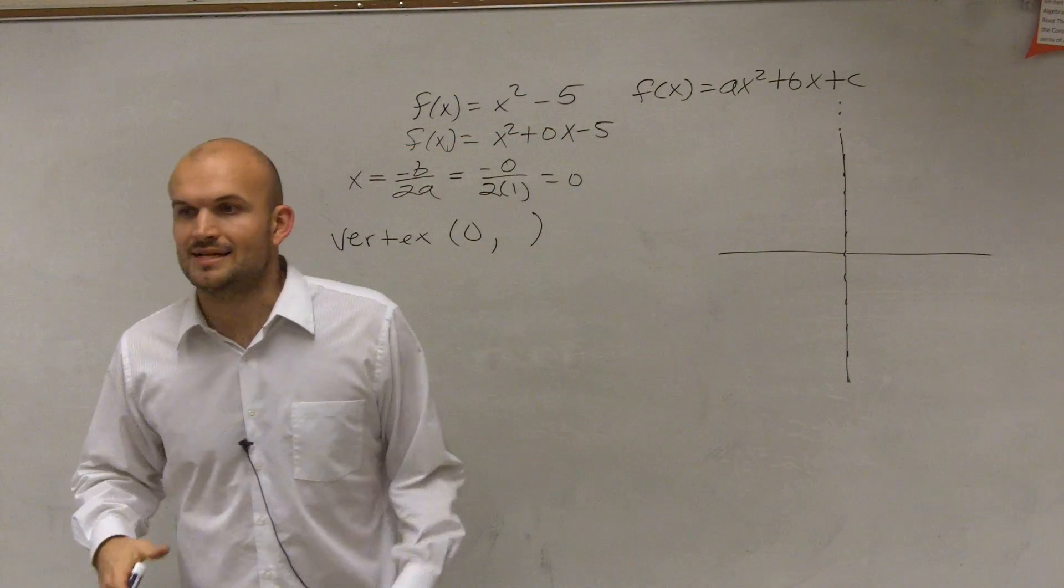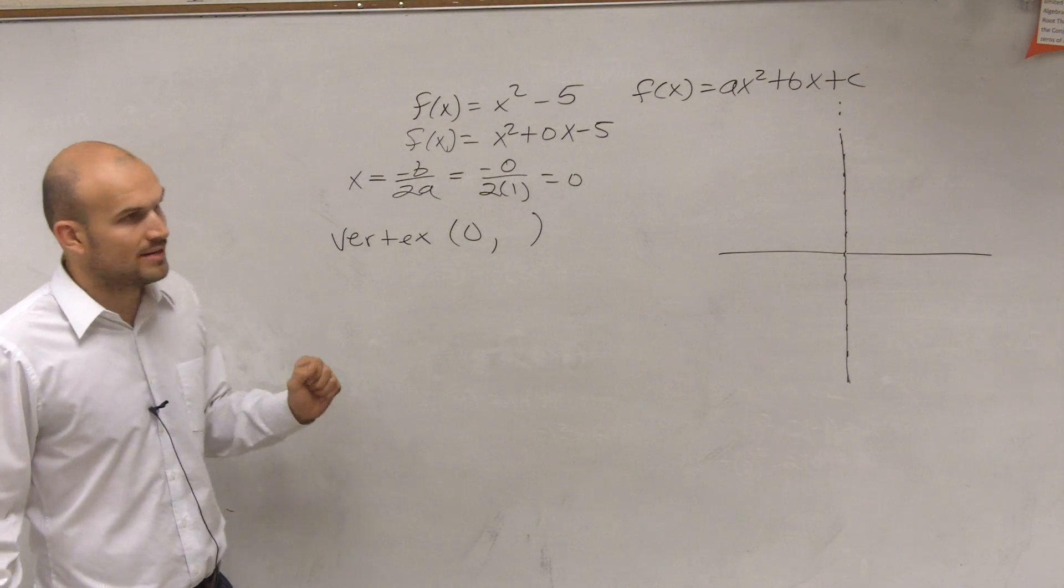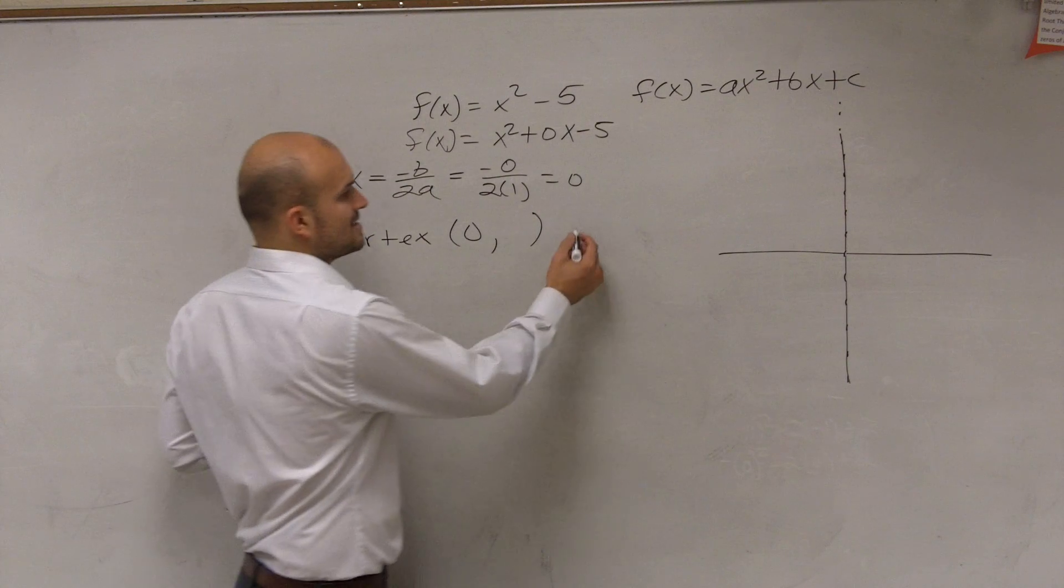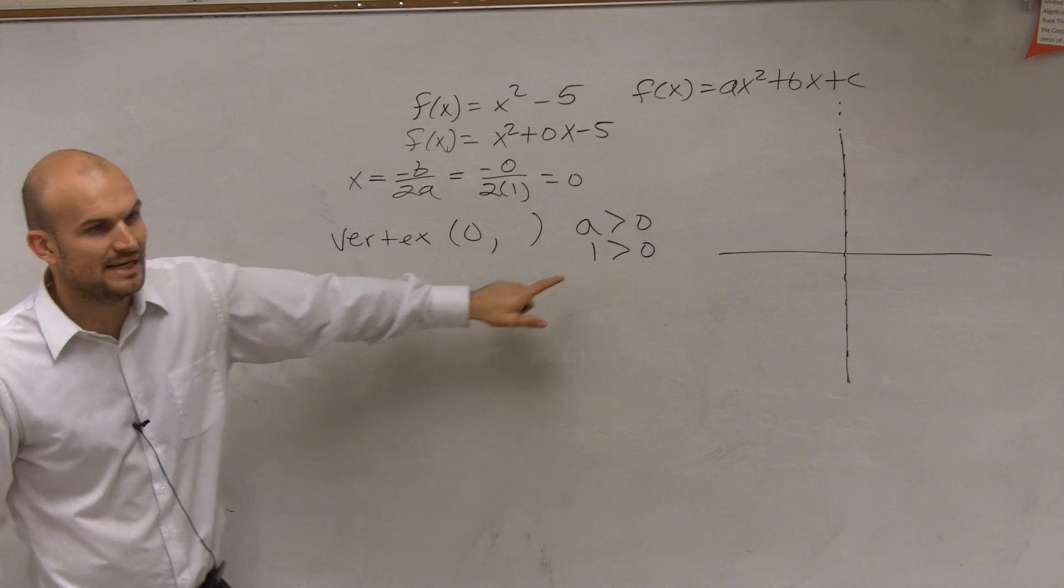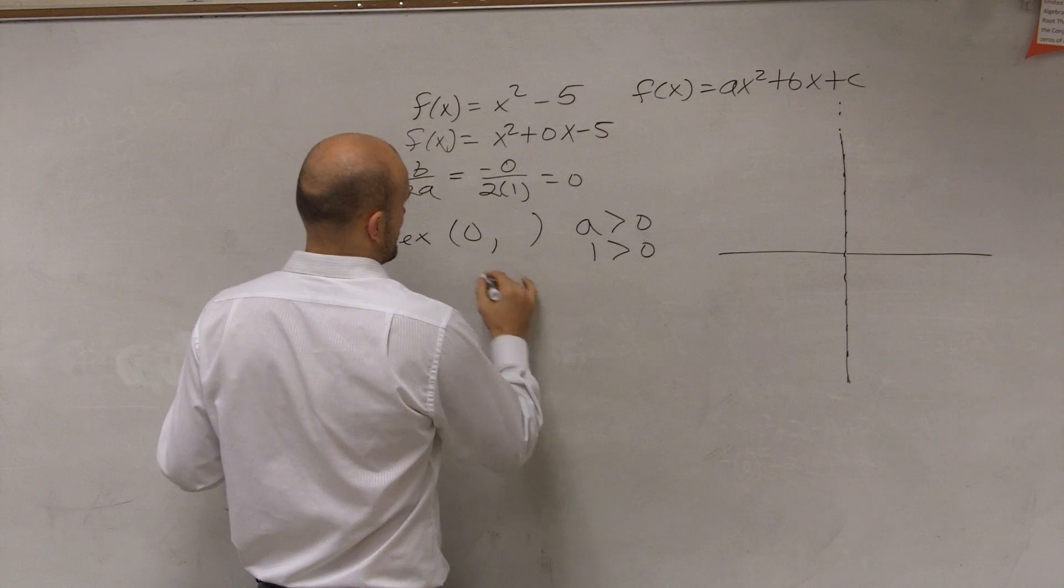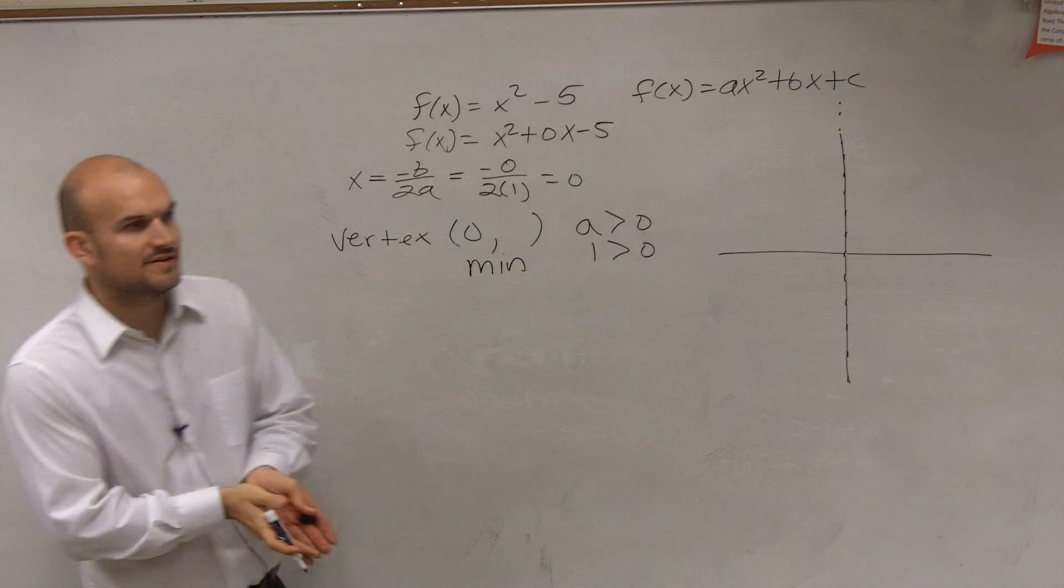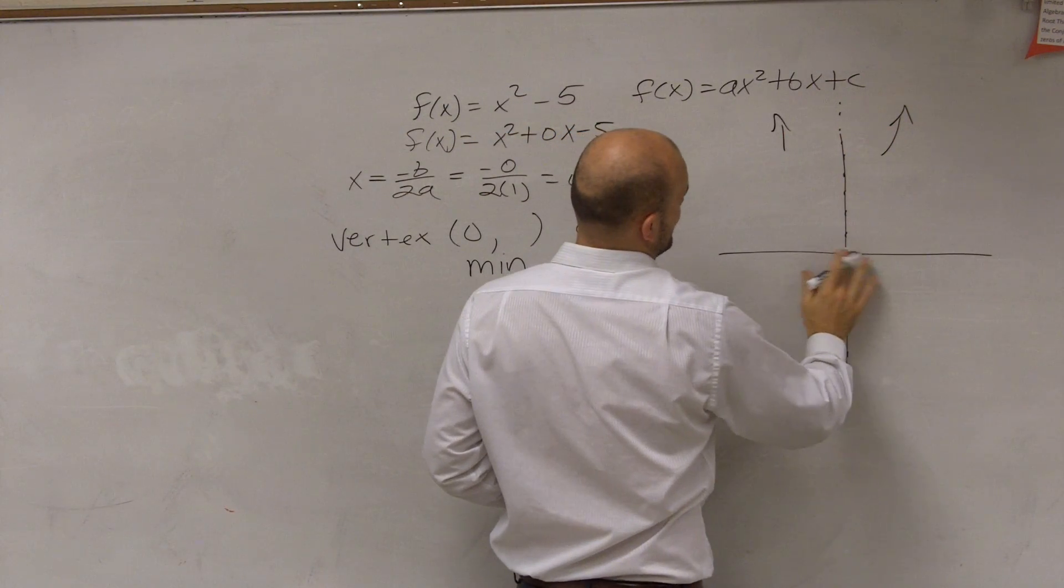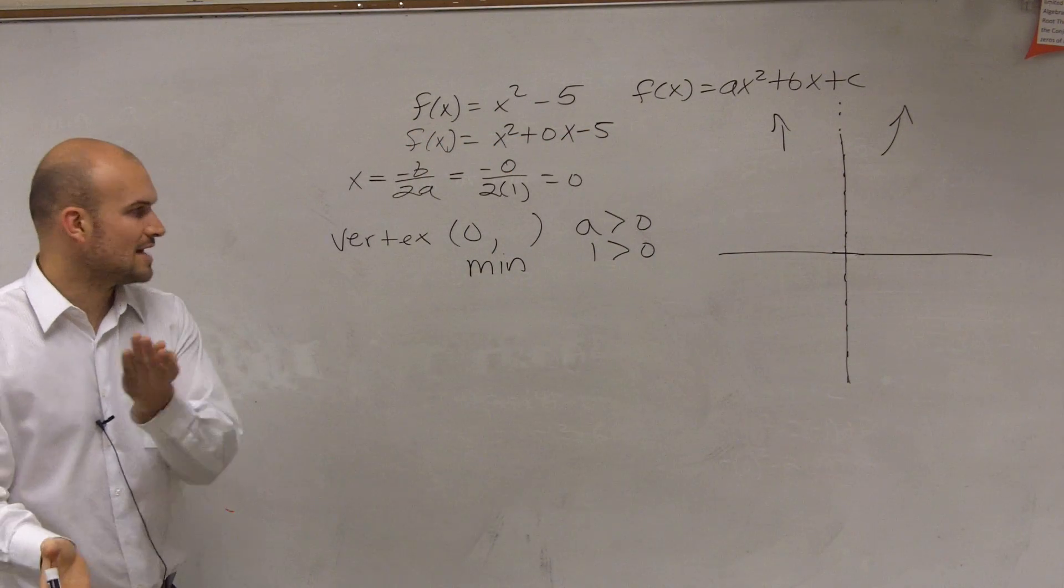So before we even do that, let's determine, does our a, is it going to open up or open down? Is my vertex a maximum or a minimum? So we look at our a, and our a in this value is 1. And since a is greater than 0, so we have 1 is greater than 0, that means we're going to have a minimum value. So our vertex is going to be a minimum value. That means my graph is going to open up. I don't know what it's going to look like right now, but I know it's going to open up. I don't know what my vertex is. So all I know is it opens up and it's going to go down to a minimum point.